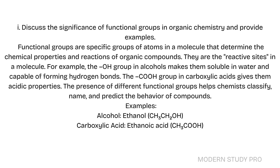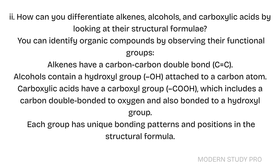Examples: Carboxylic acid — ethanoic acid (CH3COOH). Long Question 2: How can you differentiate alkenes, alcohols, and carboxylic acids by looking at their structural formulae? You can identify organic compounds by observing their functional groups. Alkenes have a carbon-carbon double bond (C=C). Alcohols contain a hydroxyl group (OH) attached to a carbon atom. Carboxylic acids have a carboxyl group (COOH), which includes a carbon double bonded to oxygen and also bonded to a hydroxyl group. Each group has unique bonding patterns and positions in the structural formula.